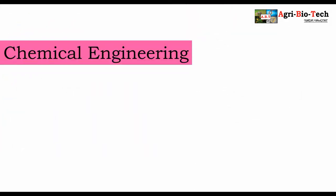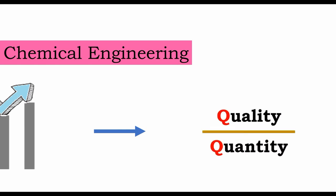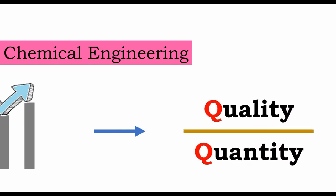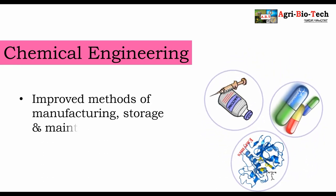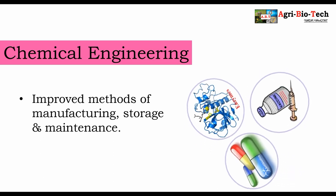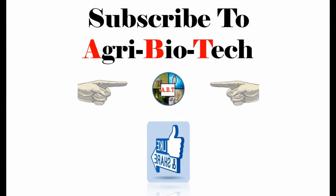The second principle is chemical engineering. Due to modern biotechnology, pharmaceutical industries have reached their peak. This resulted in many biological products in terms of both quality and quantity, and improved the methods of manufacturing, storage, and maintenance. Antibiotics, enzymes, and vaccines are a few examples. Thanks for watching — don't forget to like, subscribe, and share our channel, Agri Biotech.